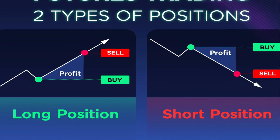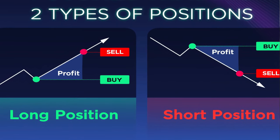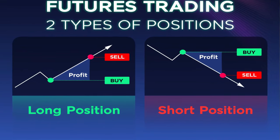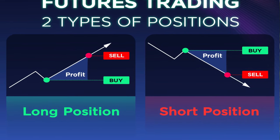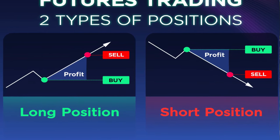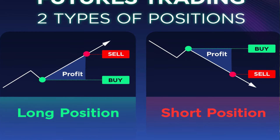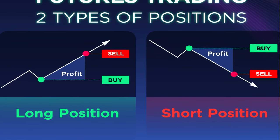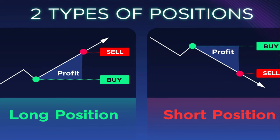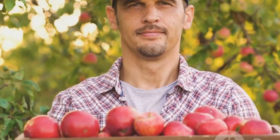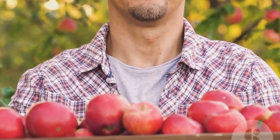Let's paint a picture. Imagine you're a farmer with a crop of apples that won't be ready for another three months. You could wait until harvest time and sell at the current market price, but what if the price of apples drops? You'd be at a loss. So instead, you make a deal with a buyer to sell your apples at a set price three months from now — this way, you're protected against any potential price drops. This is essentially how futures trading works, but with cryptocurrency instead of apples.